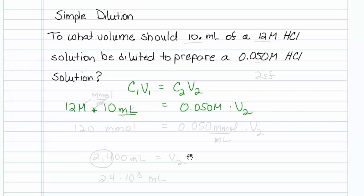So multiplying this out, 12 times 10 gives us 120, and maybe you're wondering about the units. Well, don't forget that molar can be millimoles per milliliter. So when I multiply that by 10 mls, I'm actually getting units of millimoles,